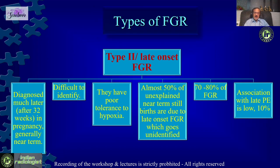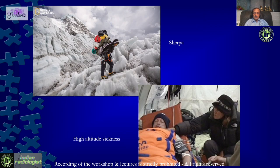Late onset FGRs are diagnosed after 32 weeks of gestation, very often at term. They are difficult to identify because often the Doppler features are not abnormal. They have a poor tolerance to hypoxia — they are not used to hypoxia. They can constitute almost 50% of unexplained near-term stillbirths, which are attributed to late onset FGR that has not been identified. They constitute almost 70 to 80% of all FGRs, and the association with late onset preeclampsia is very low, so the detection rate is very poor.